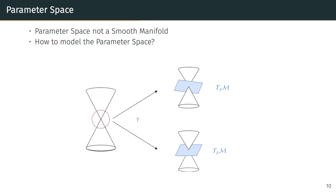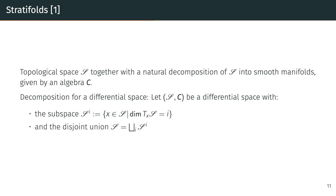Why do we need this? Let's consider again the double cone model. If we look at the singularity at the apex of the cone, we see that there is no unique tangent plane at this point, which means that the parameter space is no longer a smooth manifold. So how can we model this parameter space? For this purpose, we will consider stratifolds, a generalization of smooth manifolds — a topological space S together with a natural decomposition into smooth manifolds given by an algebra C.